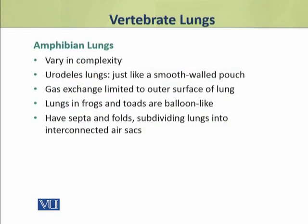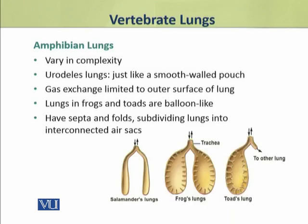We shall discuss the lungs of all four classes of vertebrates one by one, starting with amphibian lungs. Amphibian lungs vary in complexity across different groups. In salamanders, the lungs are just like a smooth-walled pouch — a bag-like structure with airspaces only on the wall for gas exchange. In frogs and toads, the lungs are balloon-like with septa and folds that subdivide them into interconnected air sacs, enabling comparatively better gas exchange.